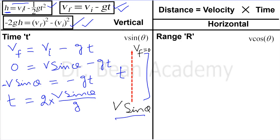So if you are given a problem related to projectile motion and asked to find the total time of flight, all you need is the velocity and the angle theta which the velocity makes with the horizontal axis, and you can easily find the time of flight.